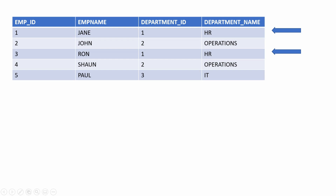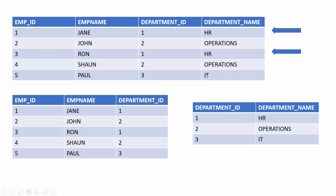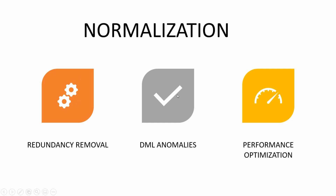To reduce this data redundancy we can split this data set into two tables: a table containing department details — the ID and the name of the department — and another table containing the details of the employee along with the department he or she works for. Now the department name is not repeated. Imagine a table with a million employees and the gain would be significant. When we talk about normalization, we talk about removing data redundancy, eliminating data anomalies, and one very important point that a lot of people miss out on is performance optimization.